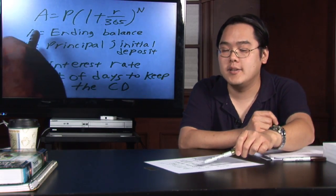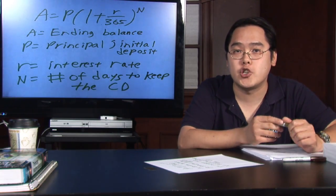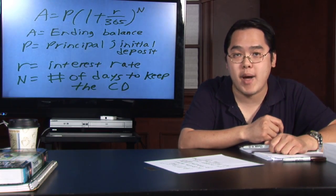Now the A stands for amount. Amount is pretty much how much you have at the very end, otherwise known as ending balance.